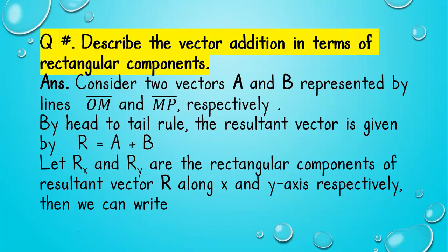There are two vectors in this diagram. One is vector A and the other is vector B.